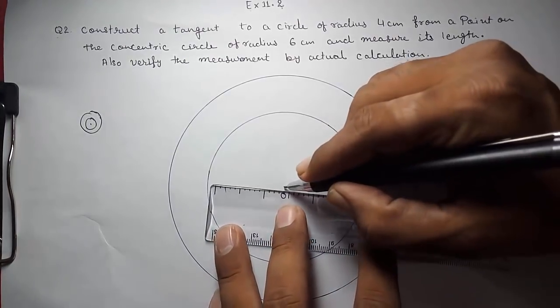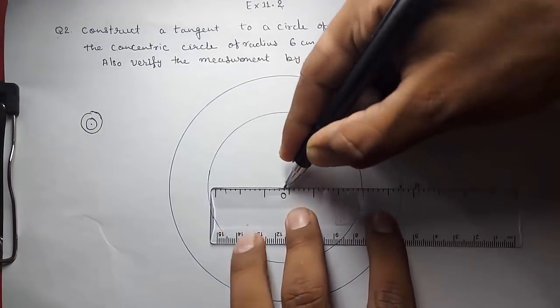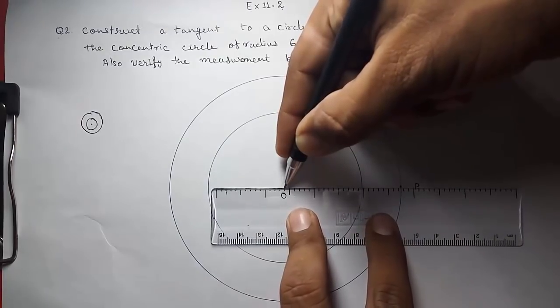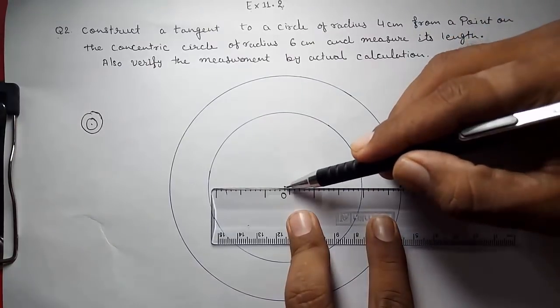First, what we have to do? We have to join this center point with point P on the circle. I think you are not able to see this. Now you can see it properly. I am going to join this.